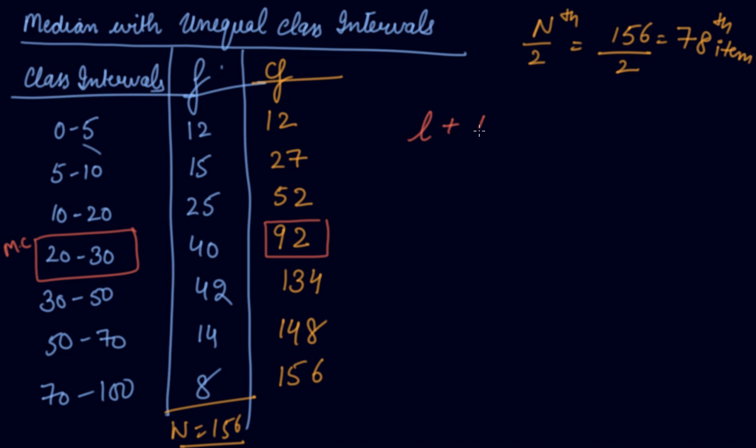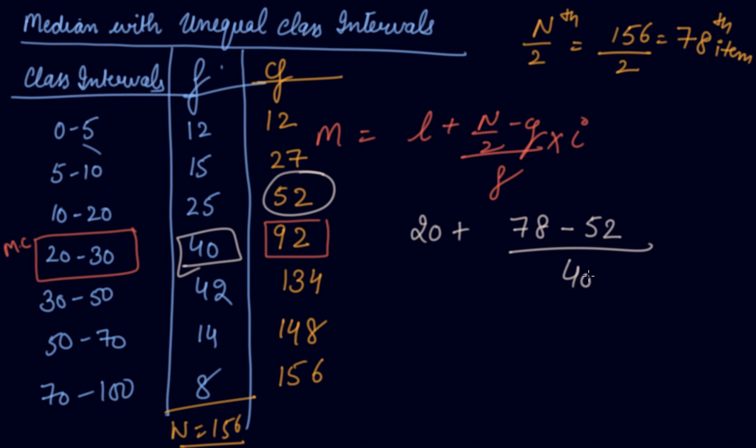Your lower limit plus (n by 2 minus CF) divided by f into i is your median formula. Lower limit is 20 of the median class. N by 2 is 78. CF is the preceding class which is 52. F is the frequency of the median class which is 40. I is the interval of the median class. Whatever the intervals are given, you have to take the interval only of the median class. So the interval is 20 to 30 which is 10. So 20 plus (78 minus 52) divided by 40 into 10. We get 20 plus 6.5 which equals 26.5. So your median value is 26.5 which lies in the median class of 20 to 30.